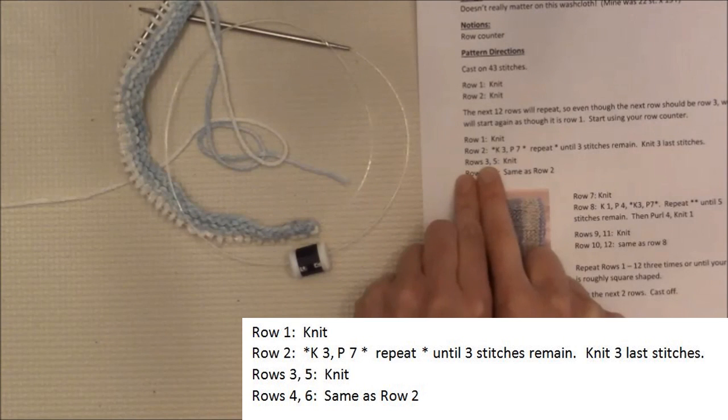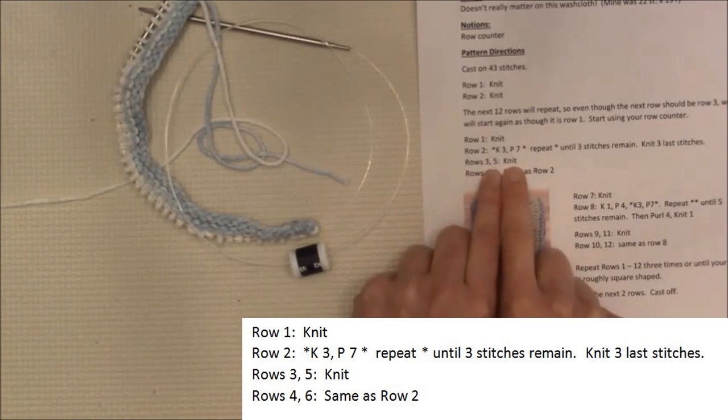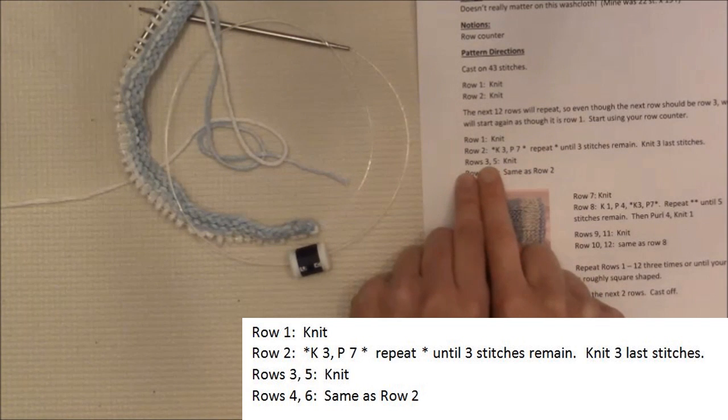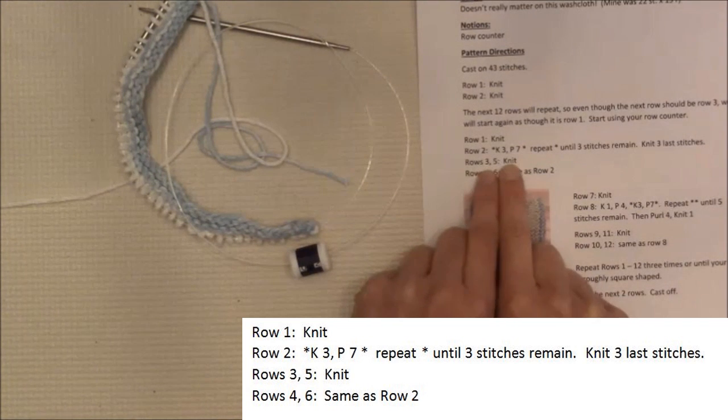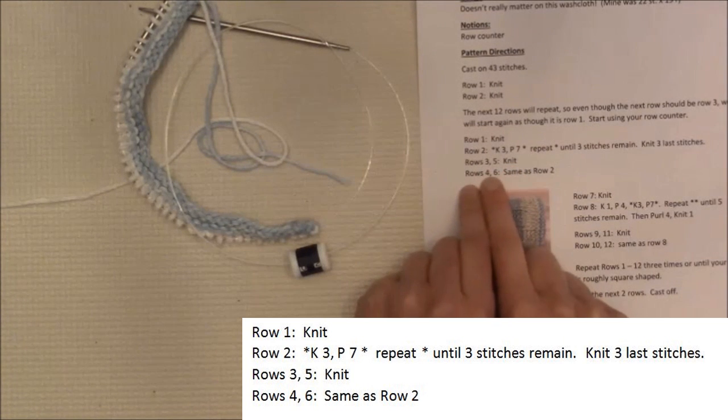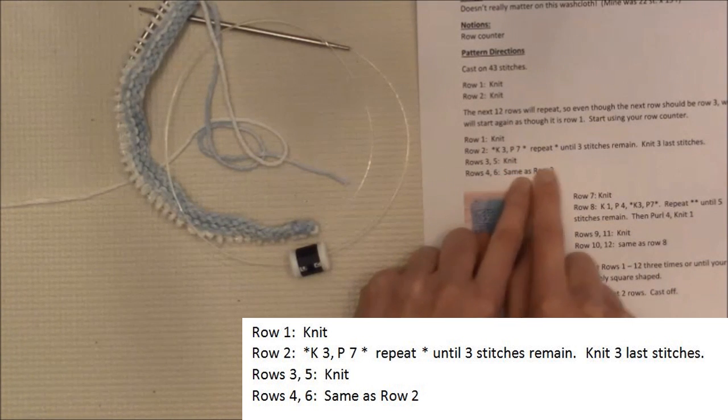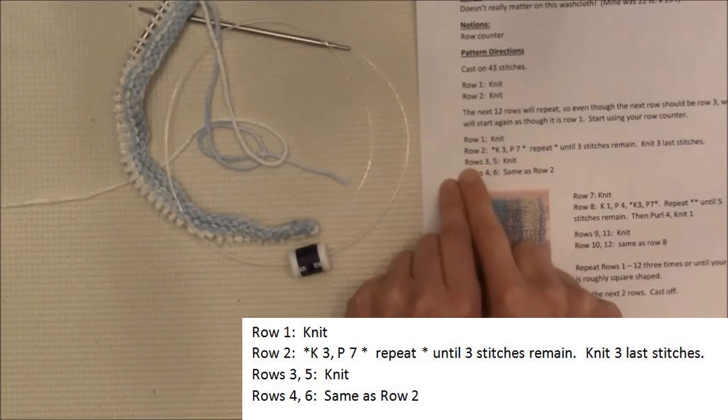So this pattern says three comma five knit. What that means is row three and row five you're going to knit. Well what happened to four? Oh, there's four. Four wants you to do something else. So we won't take it. We'll just do it one row at a time.